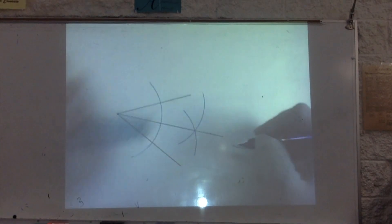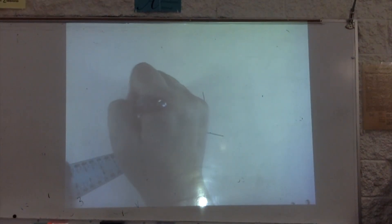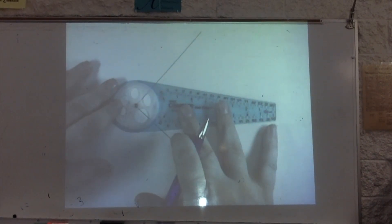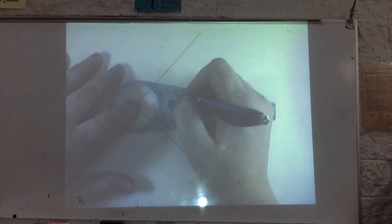And then you go to where that first arc intersected the other side of the angle, and you put the middle part of the compass there to make your arc number three. Then where the second and third arcs intersect, you draw your line between that and the vertex of the angle, and that's your angle bisector.